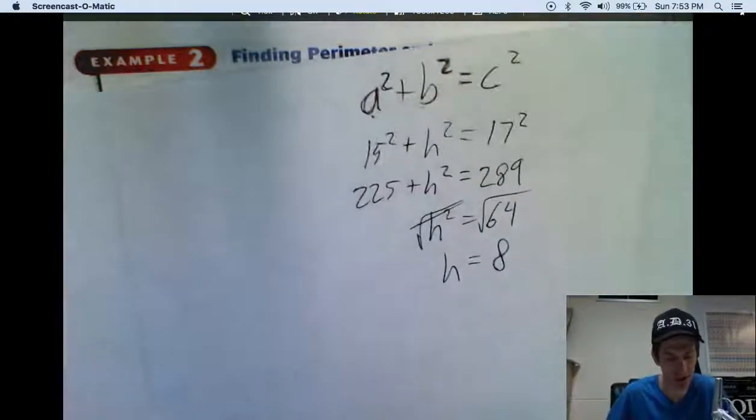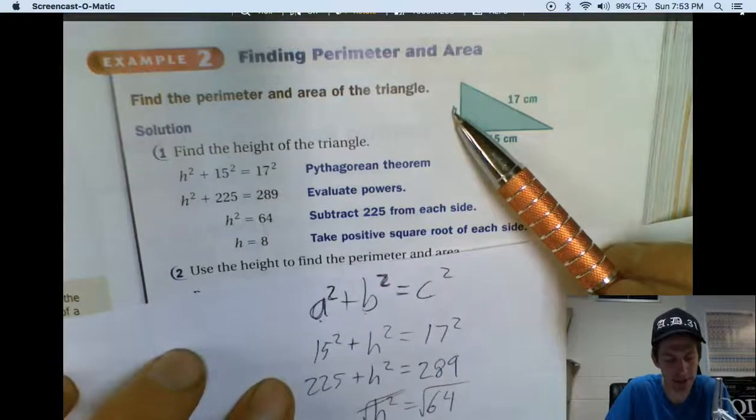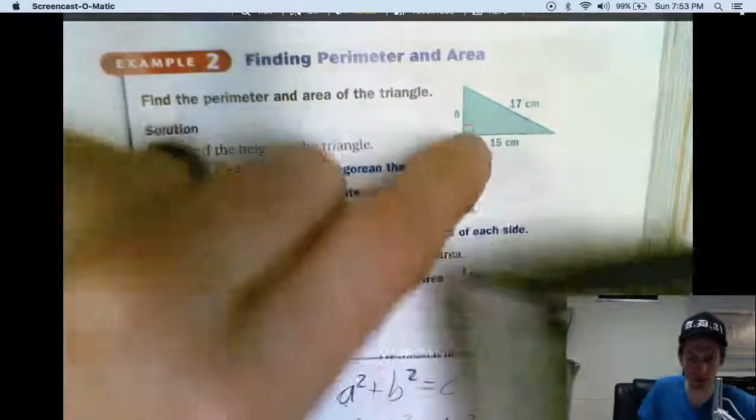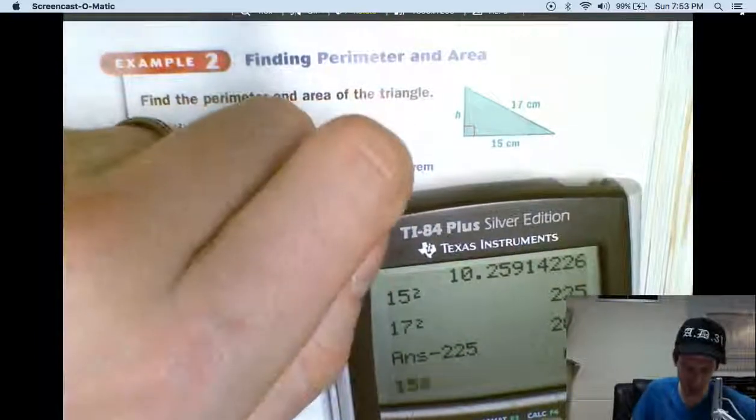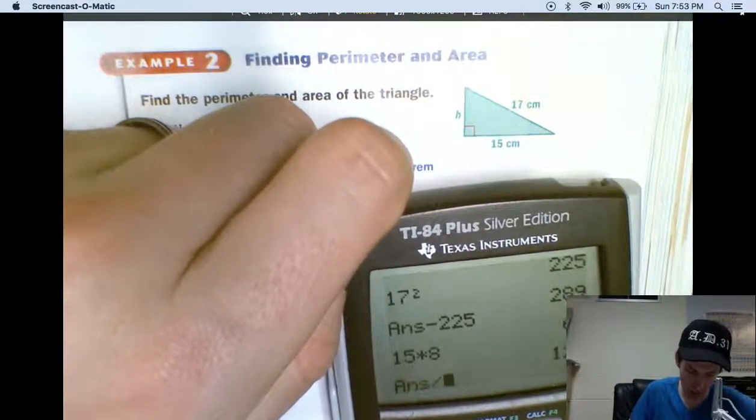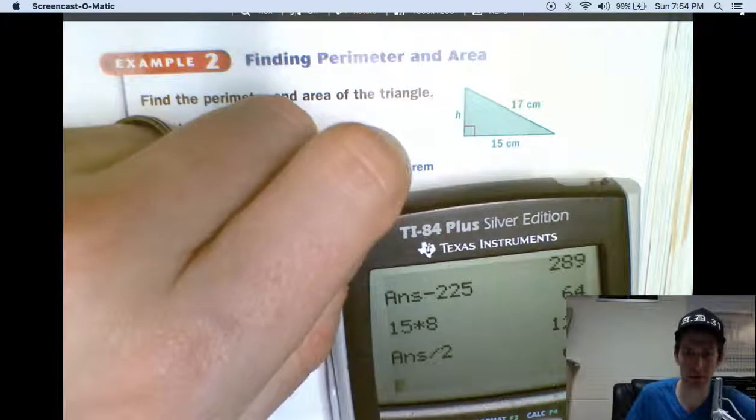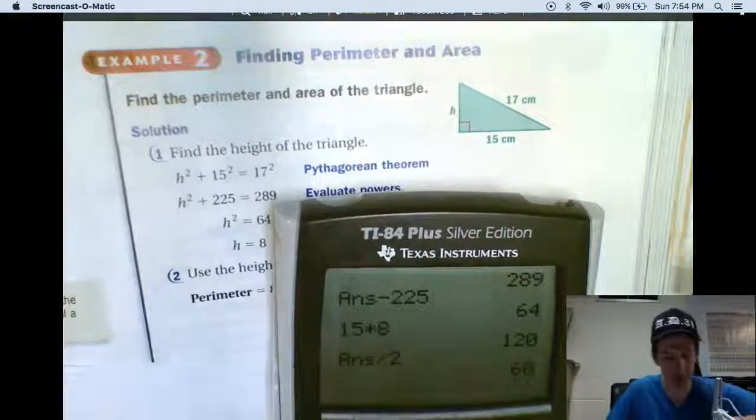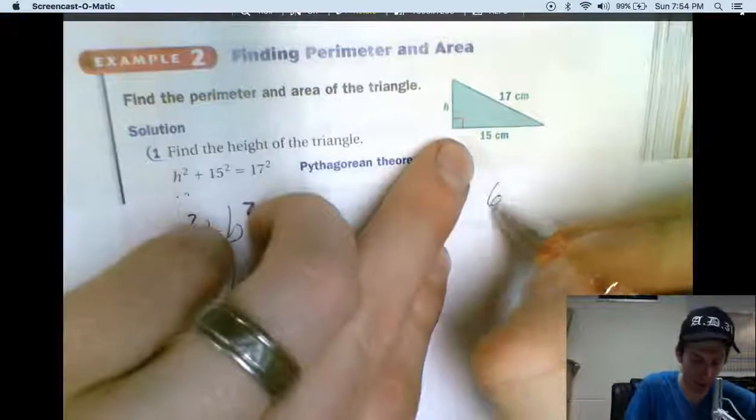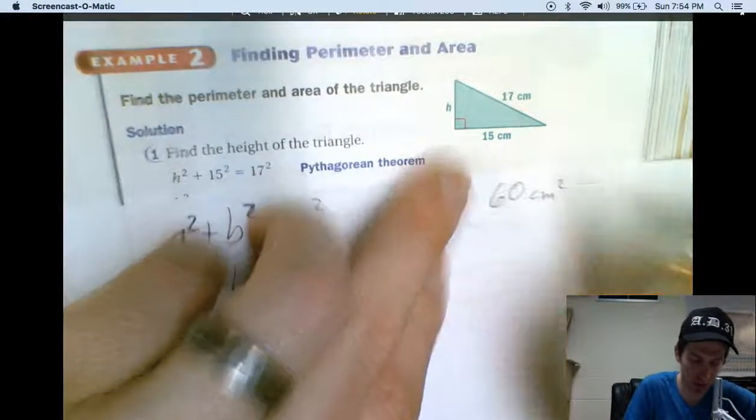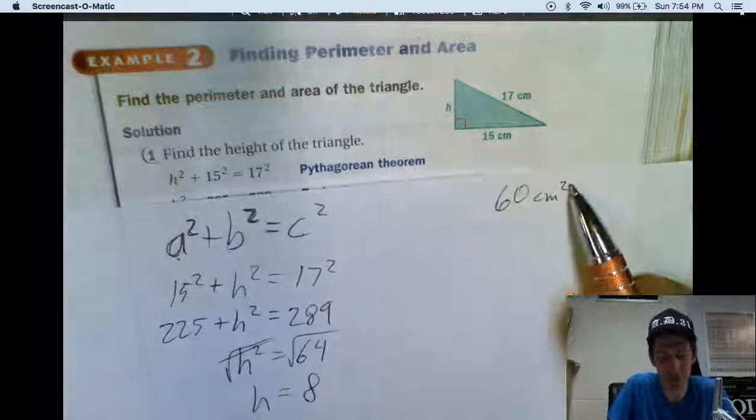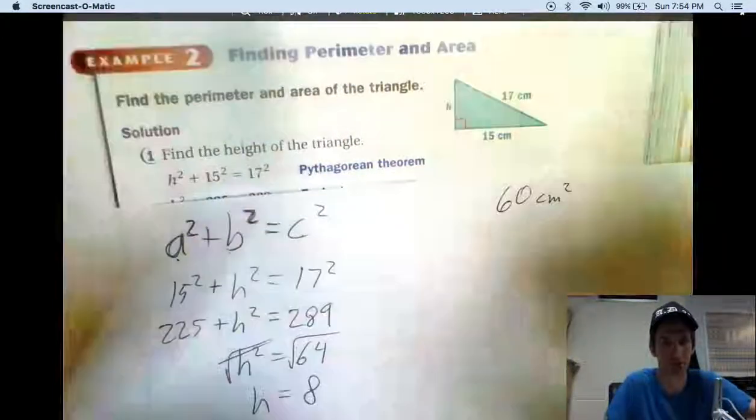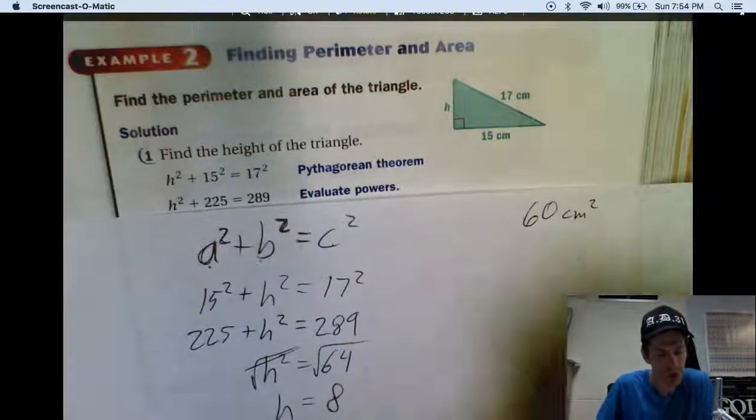All right, so h right here is 8. Now could you find the area of this triangle? Yeah. You would do 15 times 8. Boom. Divide it by 2. 60. See that down there? So that's the area. 60 what? 60 centimeters squared. That's not 60 squared. That's just units squared. So square centimeters, like little square centimeters. There's the area.